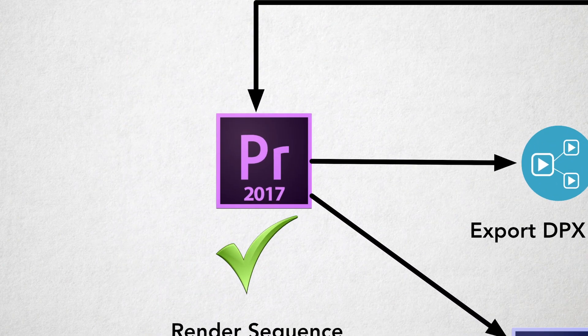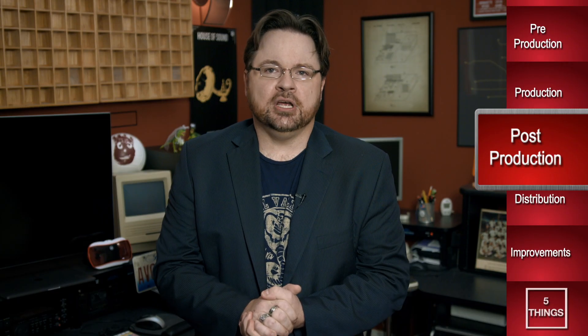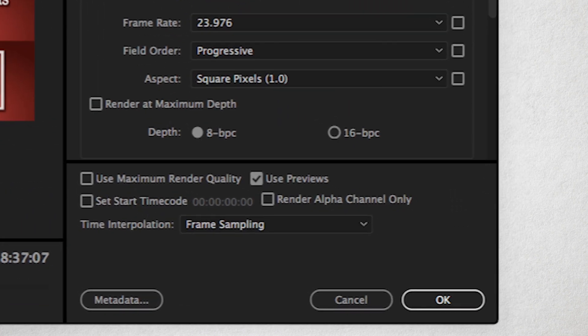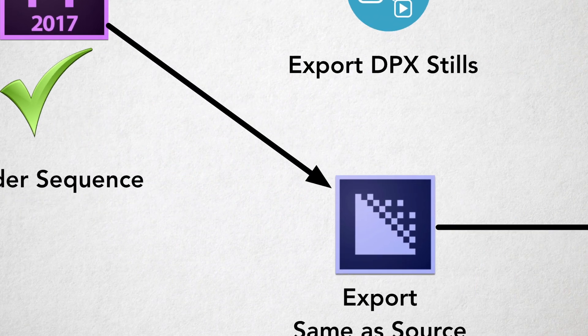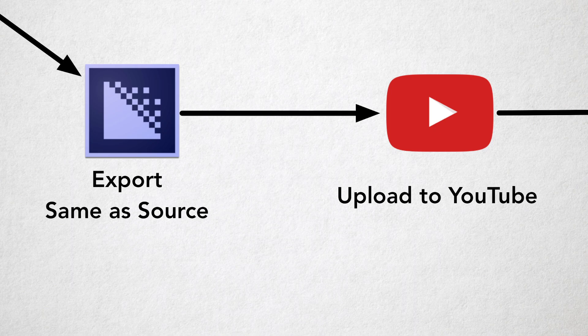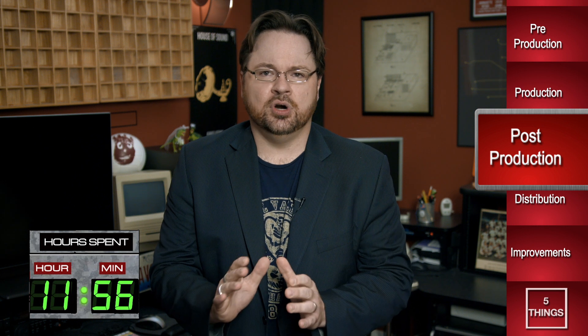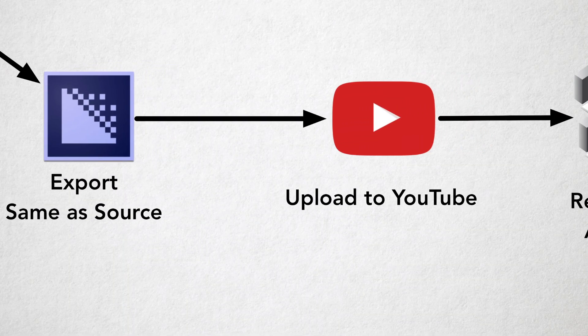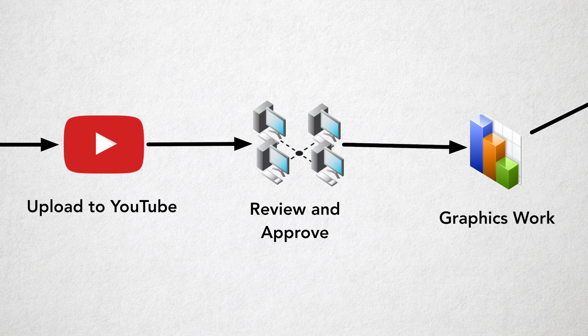Once the rough cut is done, I render the sequence and export a ProRes file using the rendered previews. Using previews allows me to go back into the sequence and make changes to fix mistakes without having to re-render the entire sequence during export. After the render, I'll export the sequence in Adobe Media Encoder, Same as Source, and upload it to YouTube. Rendering to H.264 takes up a lot of CPU resources and I want to continue working — Same as Source is a quick export, H.264 is not. YouTube will take ProRes files no problem; the upload will just take longer, but in the background. I then share this unlisted link with my friends at Moviola for their input, as well as Thomas, the motion graphics dynamo at Moviola, so he knows the timing for his motion graphics.